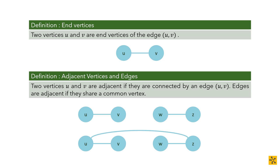Now let's go through definitions and descriptors related to vertices and edges. The first is end vertices. To have an edge, you need two vertices, because an edge is a relationship between two objects. The end vertices of an edge are U and V — they are the terminal vertices of the edge, essentially what makes up that edge.